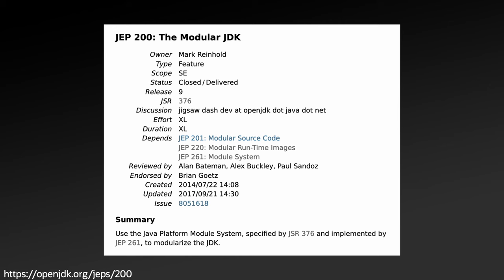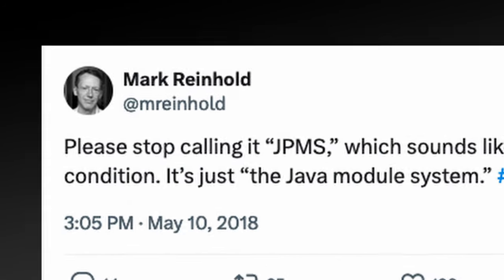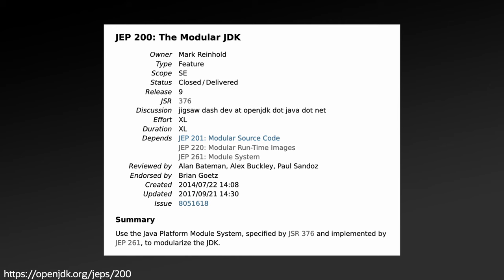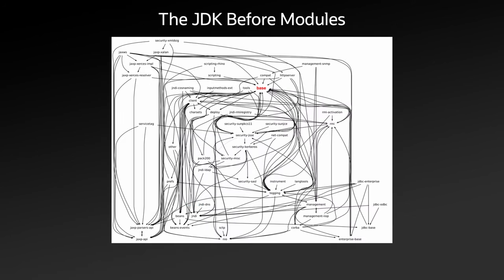JEP 200 modularized the JDK. This was necessary as before the release of JDK 9, the JDK was in a bit of an architectural rough spot, resembling your typical monolithic application, with dependencies crossing every which way. As the JDK was being shipped as a single artifact, there was relatively little harm in creating ad hoc relationships between different parts of the JDK. Though this obviously posed a problem towards modularizing the JDK and allowing for custom runtimes to be created.